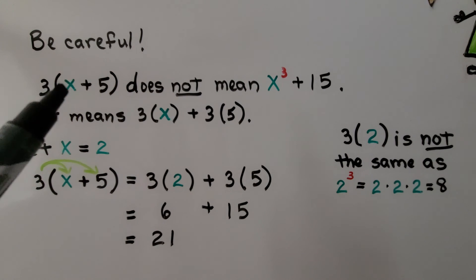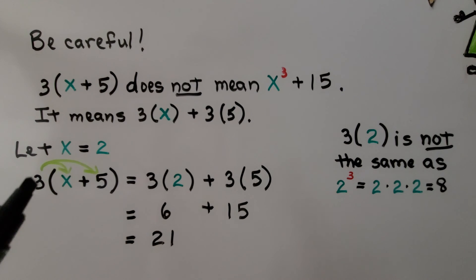This means three times whatever x stands for. So if it was a two, it would be three times two, which is six.